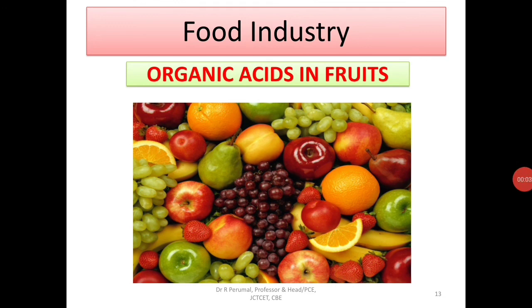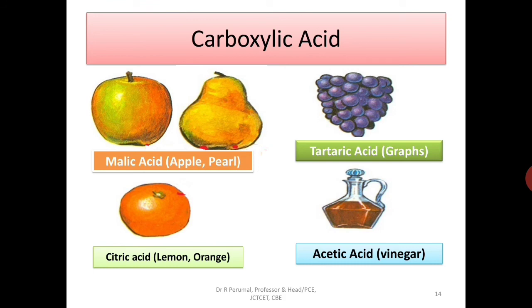Now we will discuss the general uses of organic acids in fruits. In our daily life we eat a lot of fruits, and these fruits contain organic acids. The main organic acid contained in fruits is carboxylic acid (R-COOH). Malic acid is majorly used in the food industry to produce apple flavor. Tartaric acid is present in grapes. Citric acid is present in lemon and orange. Acetic acid is present in vinegar. To make artificial flavors, you use these acids — malic acid for apple flavor, tartaric acid for grape flavor, citric acid for citric flavor, and acetic acid for vinegar.